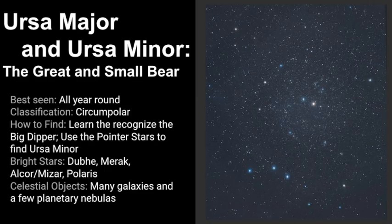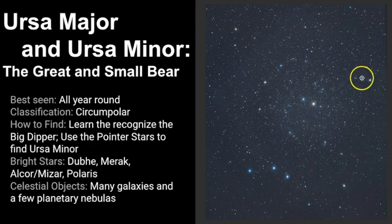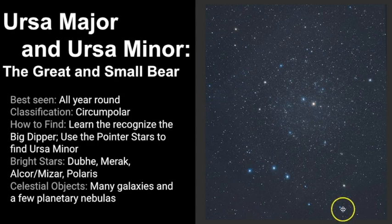As a final review: Ursa Major and Ursa Minor are also known as the Great and Small Bear. They are constellations that can be seen all year round, so we classify them as circumpolar. To find them, learn to recognize the Big Dipper, use the pointer stars to point to Polaris, and the Little Dipper arcs down with the guardians of the pole. There are many celestial objects in these regions — if you turn a telescope or binoculars to these areas, you will find many amazing things.